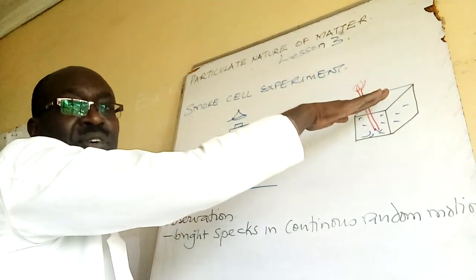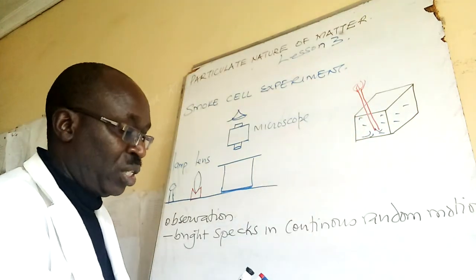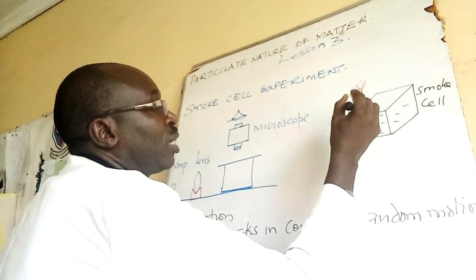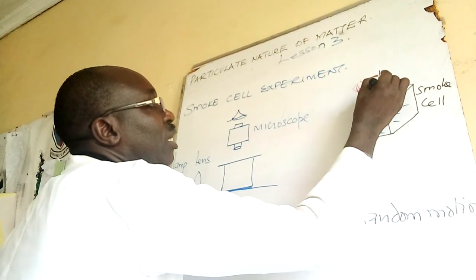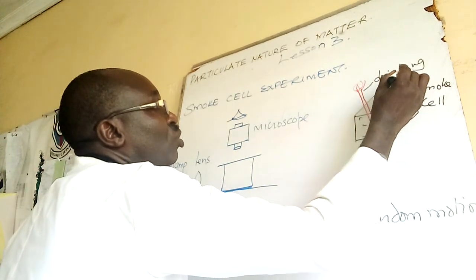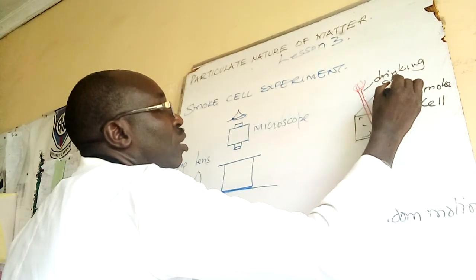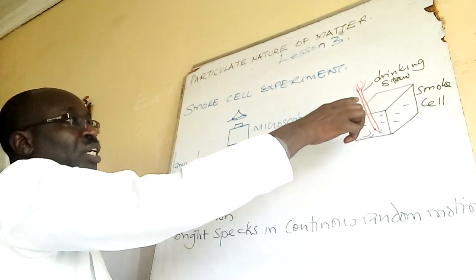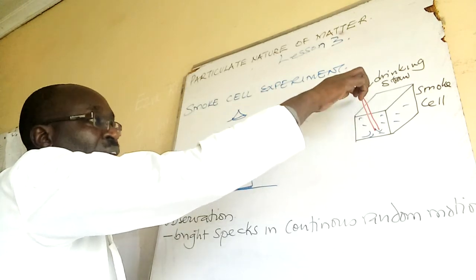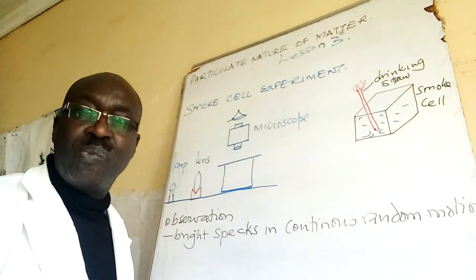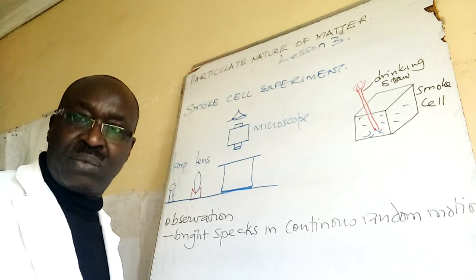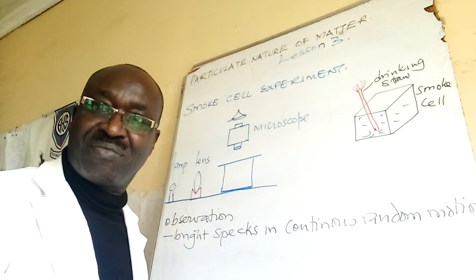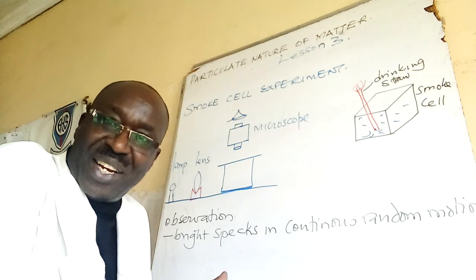You are going to cover this compartment I have shown you. So this is what we call smoke cell. This is the drinking straw. You light it one side and then the smoke comes. The smoke should be rested in the cell. It should be contained there and then you cover.